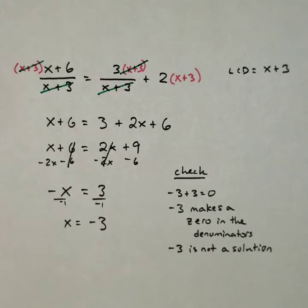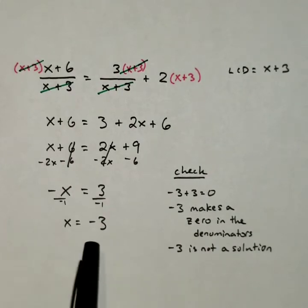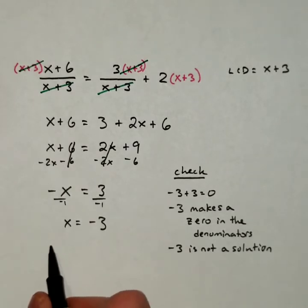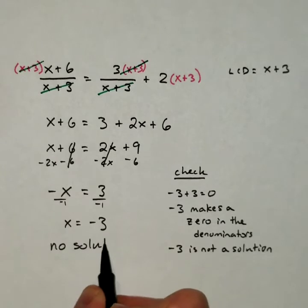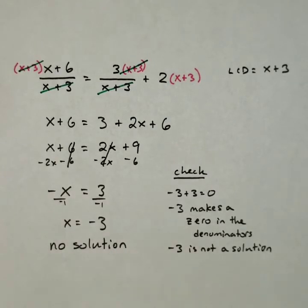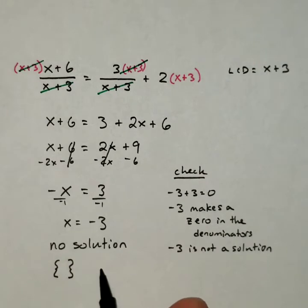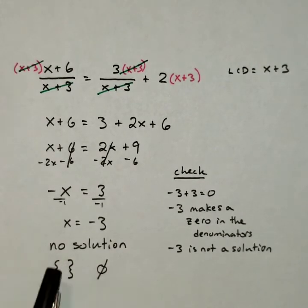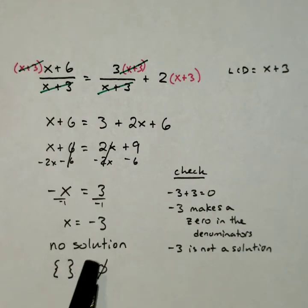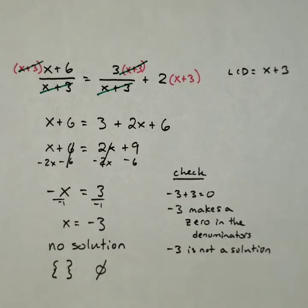And if negative 3 is not a solution, and I didn't find any other solutions, then that must mean that there is no solution to this equation. So we would say there is no solution. Or in set form, I prefer that you guys write it as an empty set. However, MyMathLab, I believe, is going to want these written as the circle with a slash through them. I prefer the empty set, but again, it doesn't really matter. You can write either of those two. Okay? No solution on that one.